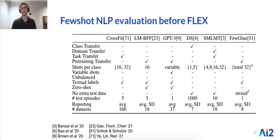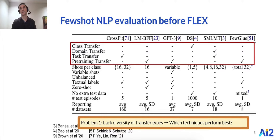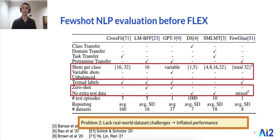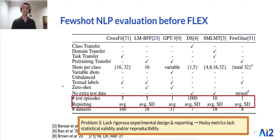Here is some representative work on few-shot NLP evaluation before FLEX. The first problem we identify is a lack of diversity of transfer types — most prior work evaluates one or at most two types, making it difficult to answer which techniques perform best in general. Second, these evaluations lack real-world dataset challenges like unbalanced variable training sets where the number of examples is unknown at meta-training time, resulting in inflated performance. The third issue is a lack of rigorous experimental design and reporting, which results in noisy metrics that lack desirable statistical properties.